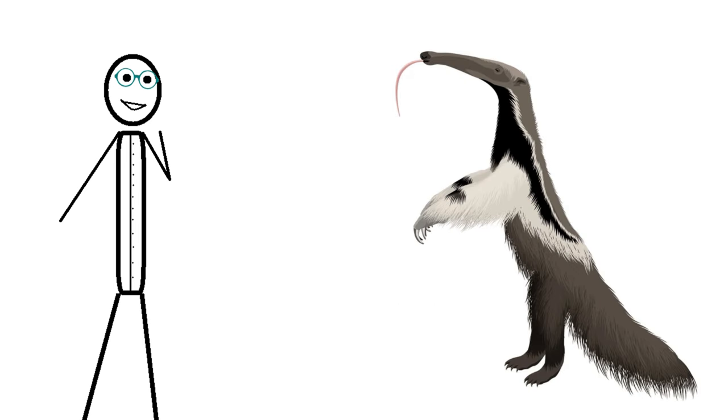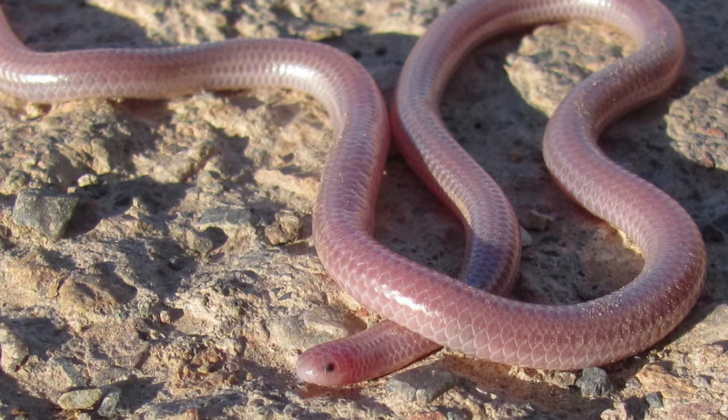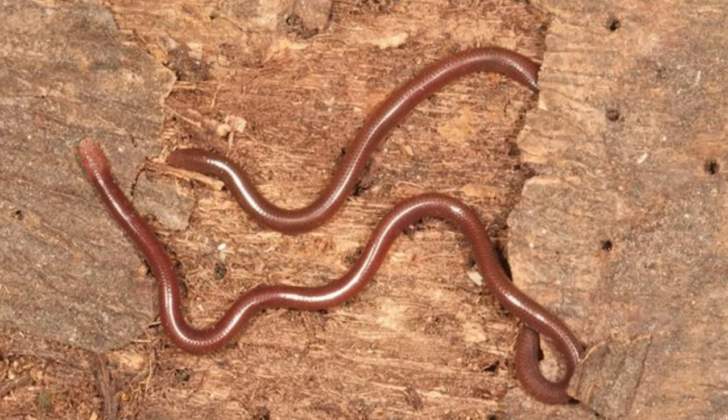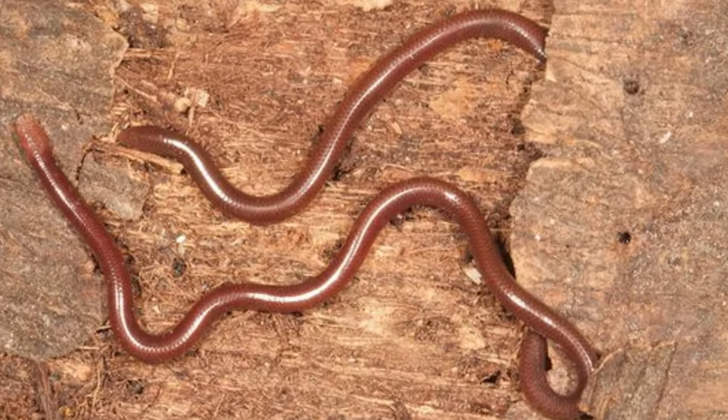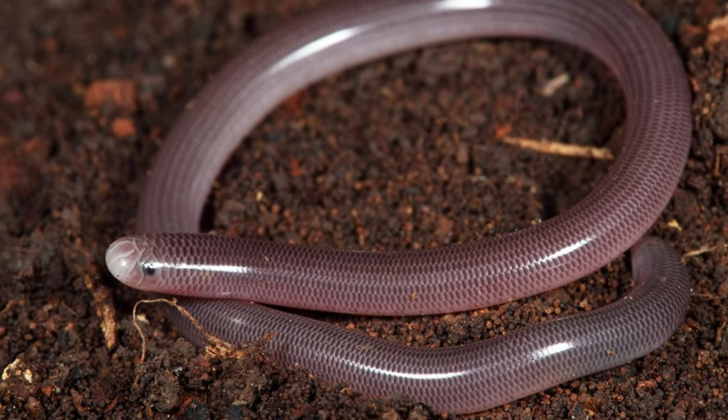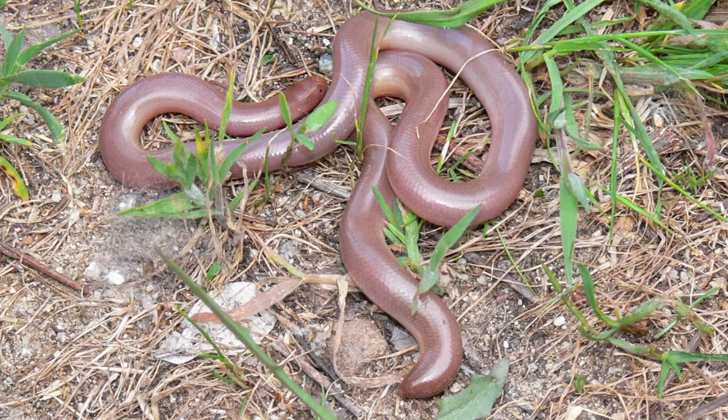Even snakes eat ants. Scolecophidia snakes feature tiny bodies and very diverse families, but all feed on invertebrates. And some of the main food sources include ants and termite eggs, which are tracked down by following chemical cues left by these invertebrates' trails.